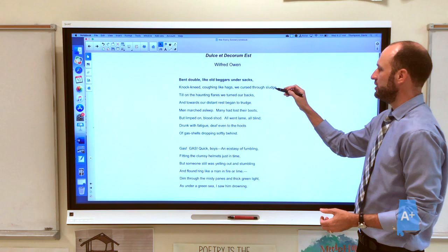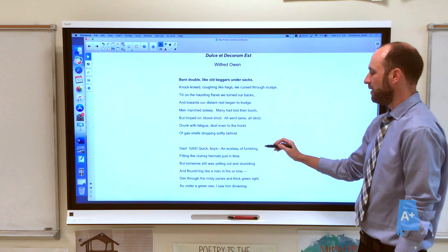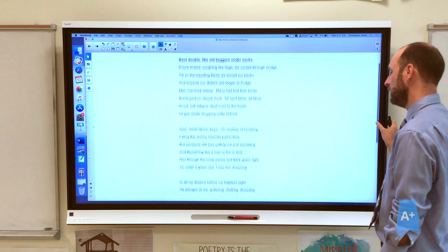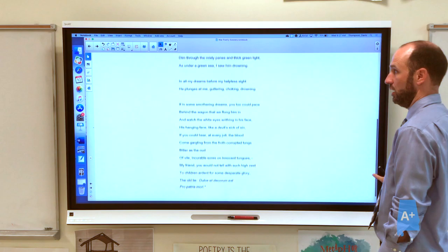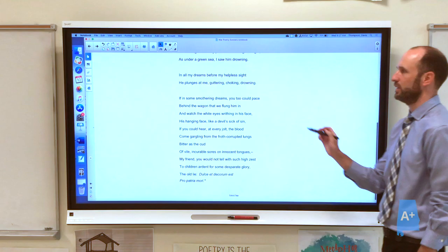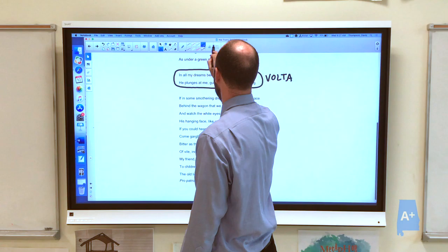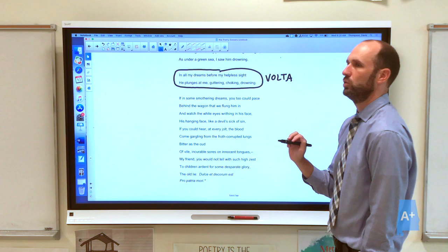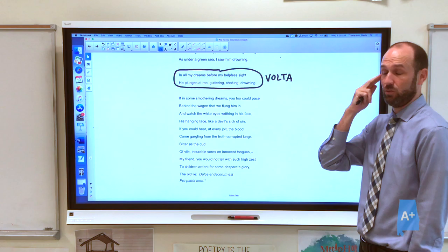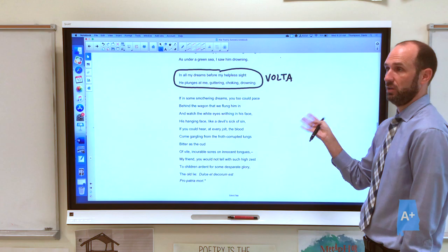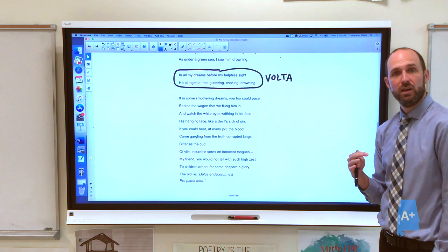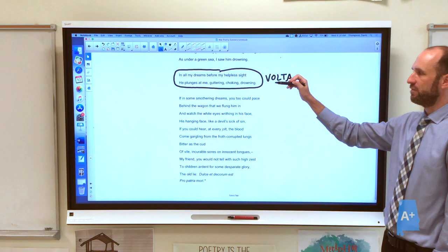Sacks sludge, backs trudge. Boots blind, hoots behind. Fumbling time, stumbling line, light drowning. Sight, drowning. Notice that he repeats the word drowning twice. That's sort of cheating, it's not actually rhyming. It's using the same word, but it actually is because right here in the center of the poem is sort of this magical, I guess I would call it the volta of the poem, where it changes everything. The whole poem turns from just pure description of the gas attack to what the gas attack and the memory of that gas attack means to the speaker of our poem, Wilfred Owen, who did die in World War I.